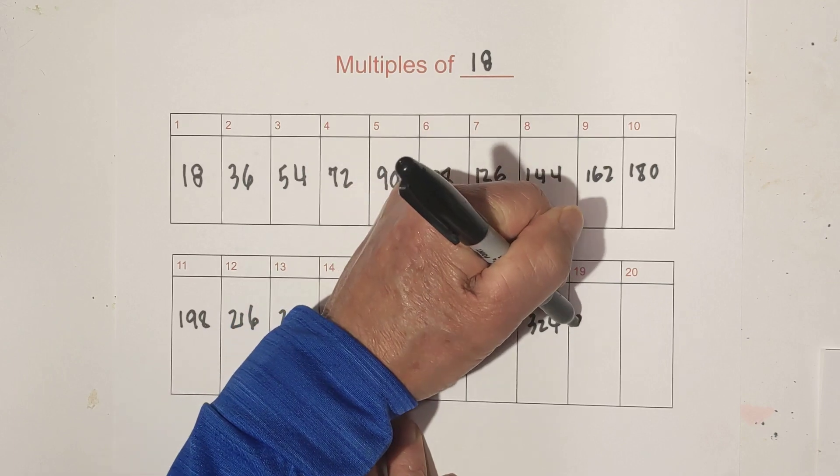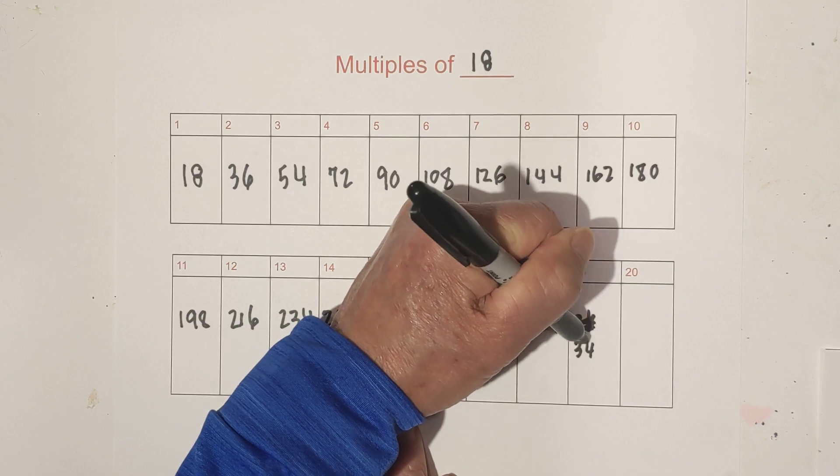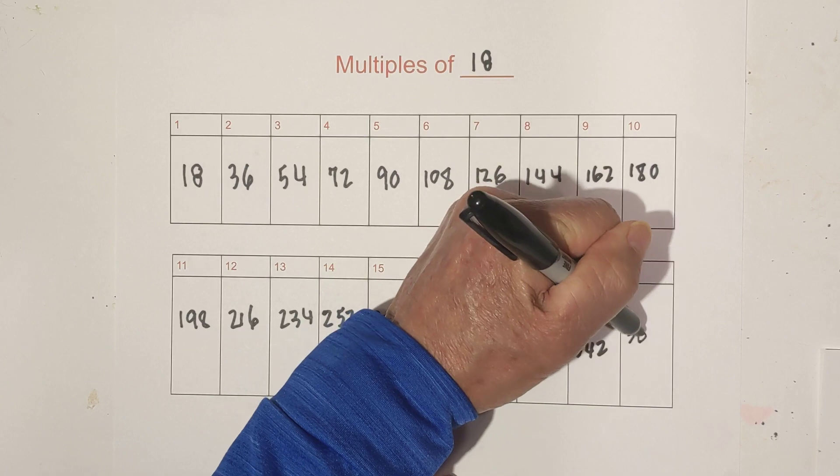342. That's a terrible 342. There's 342, that's a little bit better. And then times 20 is 360.